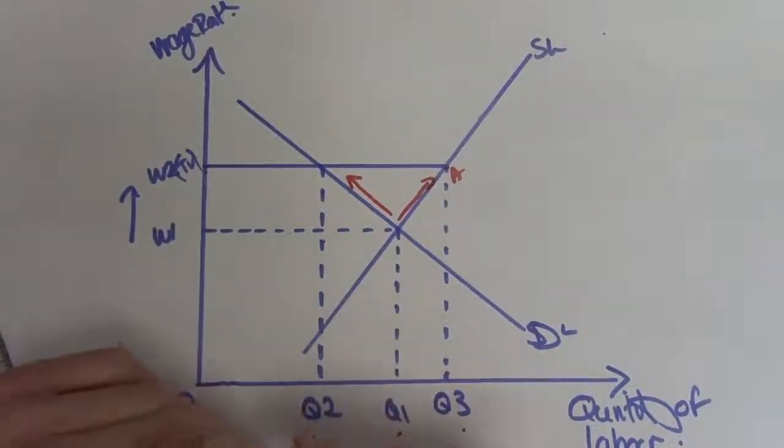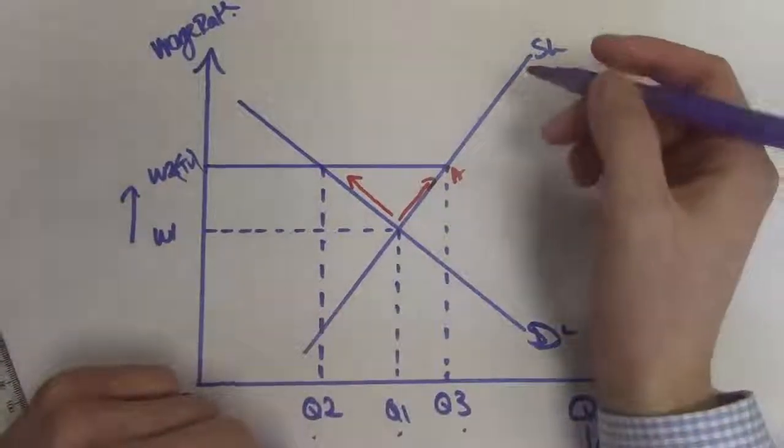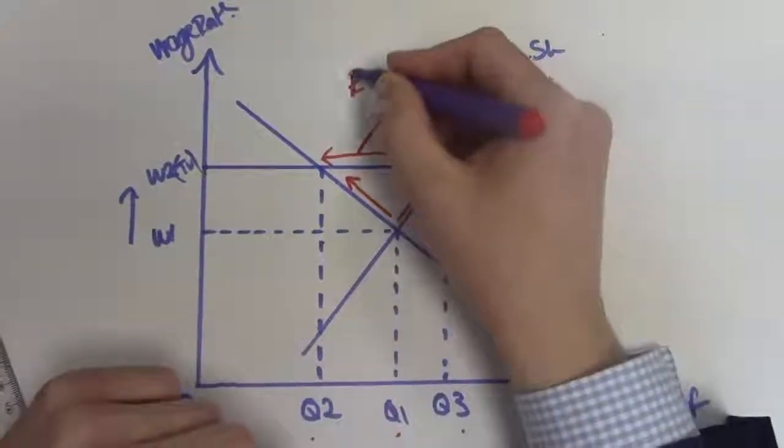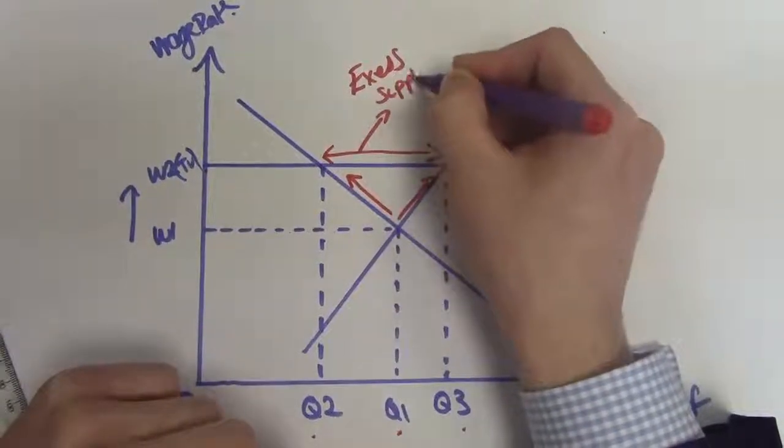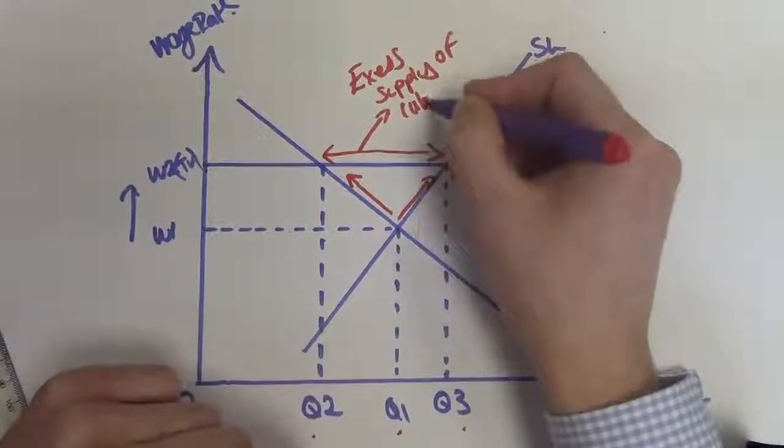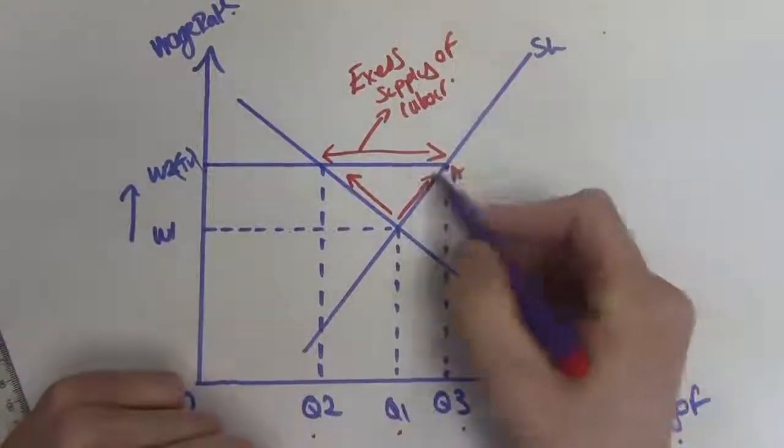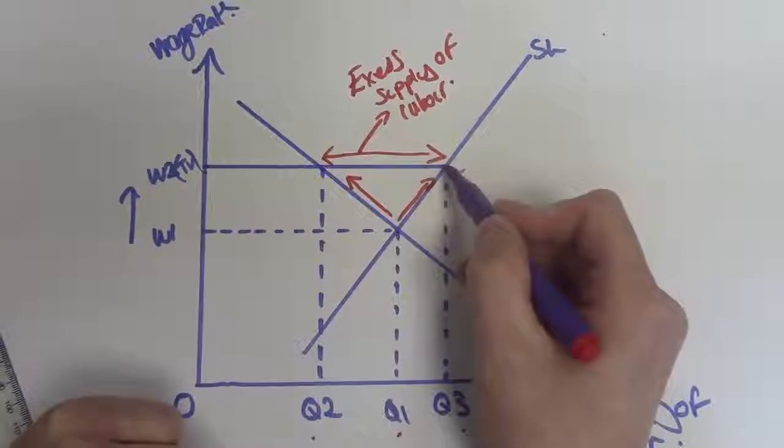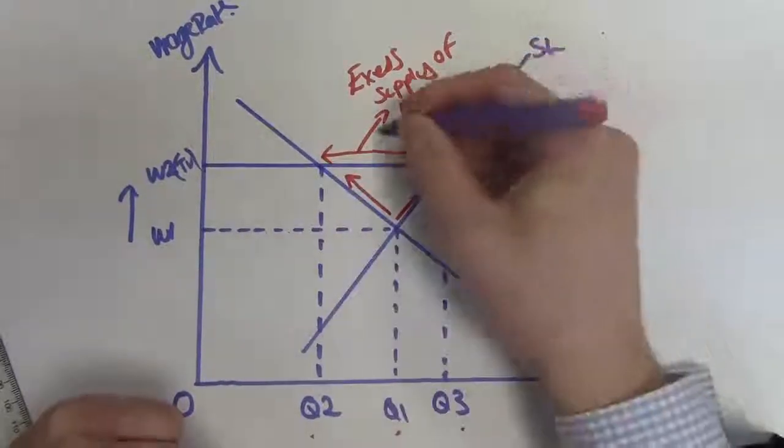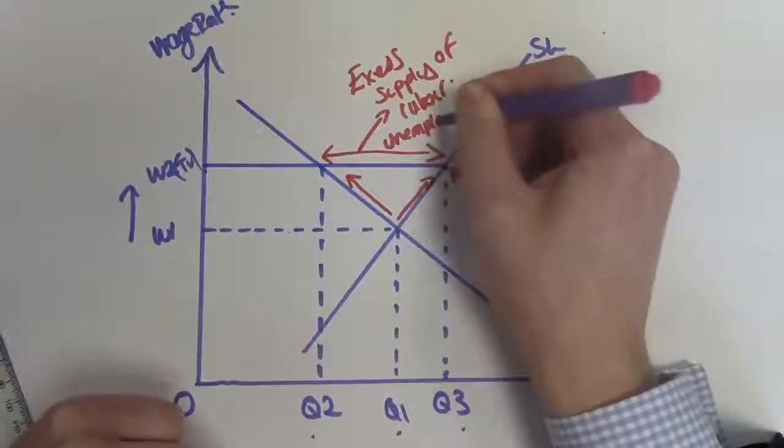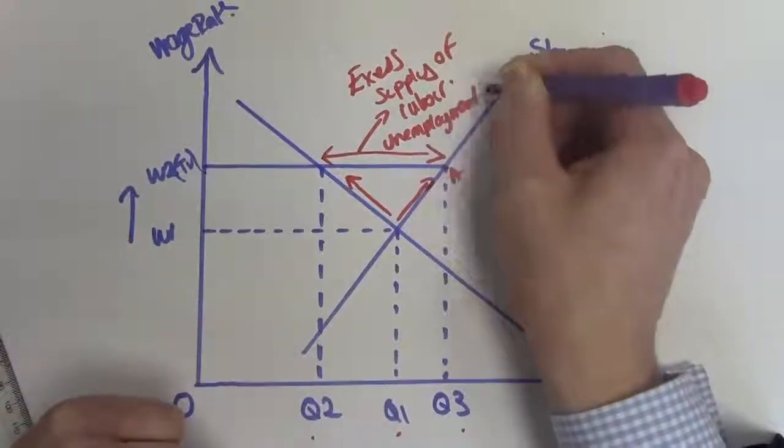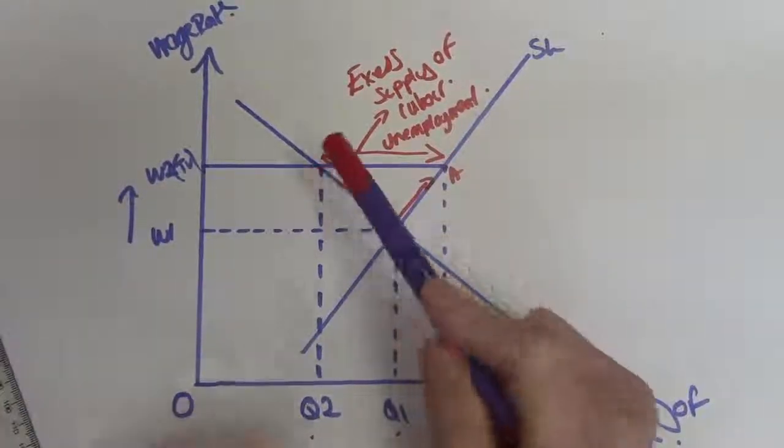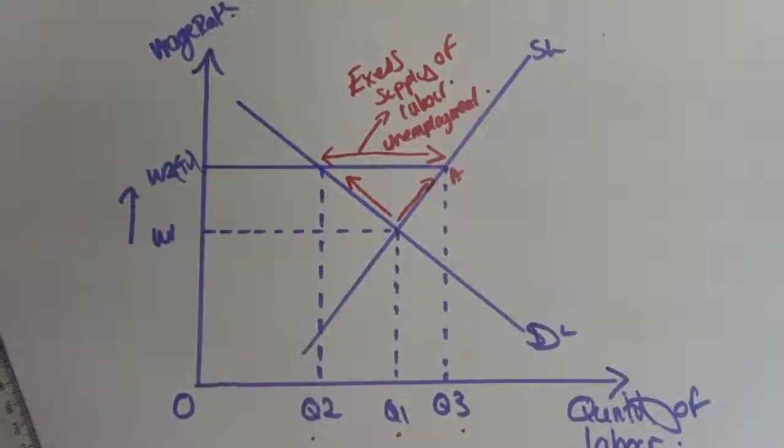Increasing the wage rate, great for supply, encourages more people to supply, but we've now ended up with this area here being an excess supply of labor. People want to supply Q3, but the firm only wants to demand at Q2. More people are willing and able to work than what the firm can afford to pay. So this ultimately causes unemployment. Why does it create unemployment? Firms will now only demand at Q2. In the short run, what's likely to happen is that staff will get a pay increase.